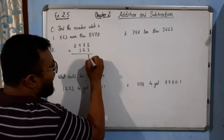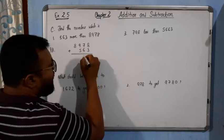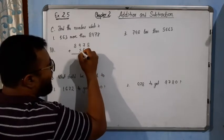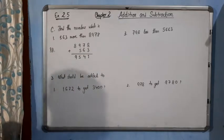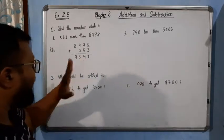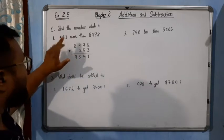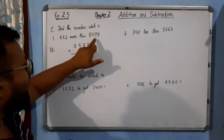So 8 plus 9 is 10, 11, write 1 and carry 1 here. 7 becomes 14, write 4 and carry 1. Then 10, 5 and 15, write 5 and carry 1, gives us 9. So 9541 is 563 more than 8978.